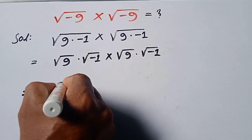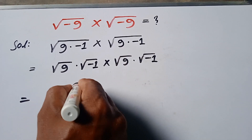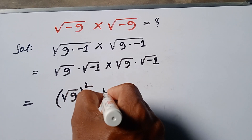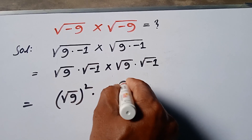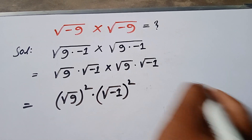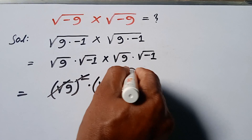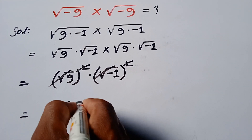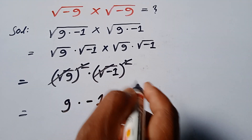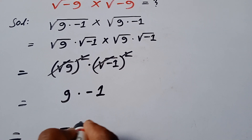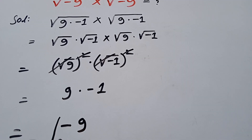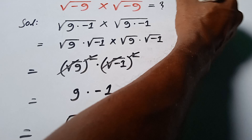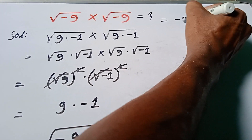Then √9 squared times √(-1) squared — the square roots cancel — giving 9 times -1, which equals -9. So the answer to this question is -9.